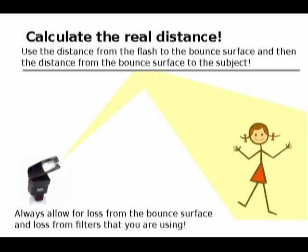Also, if you have a flash mounted off-camera, you do not measure the distance from the camera to the subject — you measure the distance from the flash to the subject. And please keep in mind that if you're using filters, you have to compensate for the amount of light lost by the filter. Also, if you're bouncing off a surface that is not as reflective as you want it to be, you also have to compensate for that. Remember that about calculating the real distance of the flash.